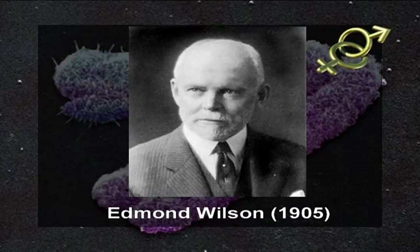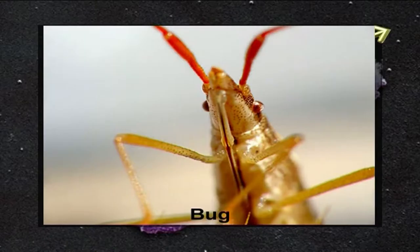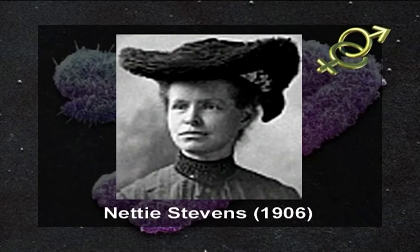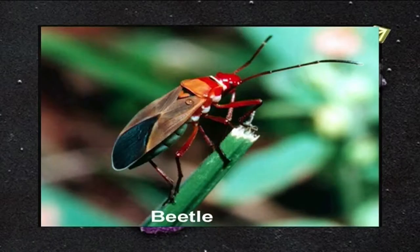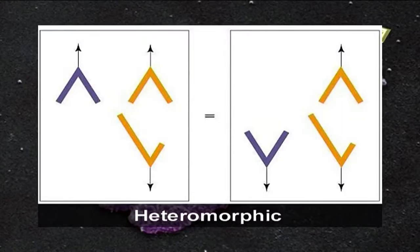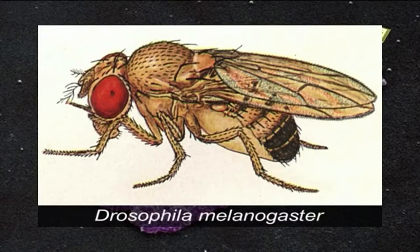In 1905, Edmond Wilson noted that females of Protenor, a hemipteran bug, had seven pairs of chromosomes while males had six pairs and an unpaired chromosome which he called the X chromosome. The X and Y chromosomes were first discovered in beetles by Nettie Stevens in 1906. She noticed that cells of female beetles had identical looking pairs of each of their chromosomes — known as homomorphic — but that male beetles had one pair in which the chromosomes were very different in appearance from each other — known as heteromorphic. She called these two chromosomes the X and Y and found that female beetles differed from males in containing two X chromosomes.